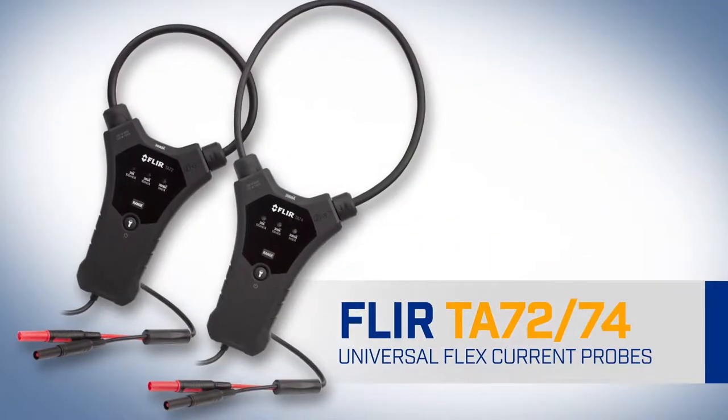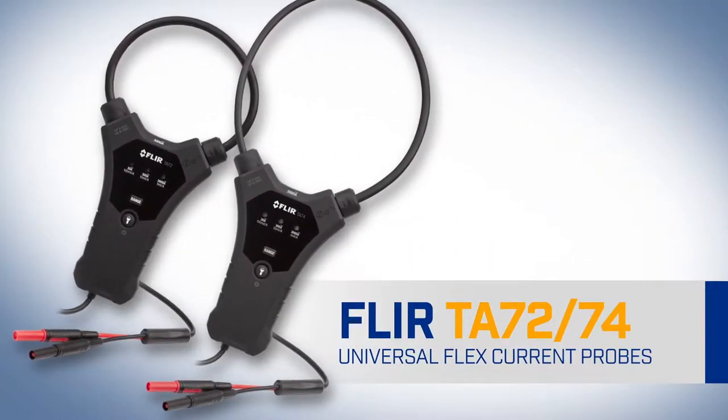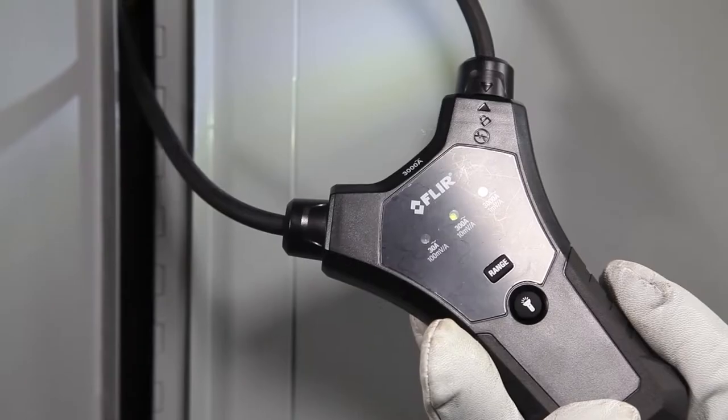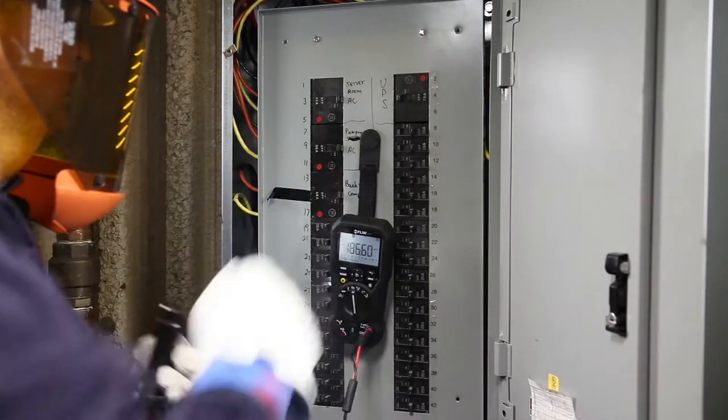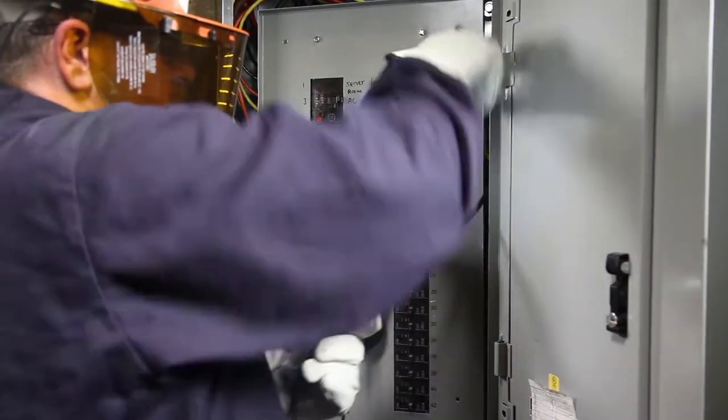The FLIR TA72 and TA74 universal flex current probes. The new ergonomic accessories that add flexibility, speed, and value to your existing meter, so you get the best, most accurate readings.